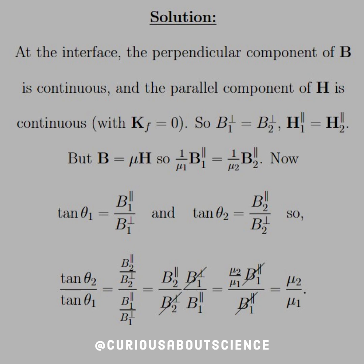Okay, but we know that the magnetic field is related to H via μH, so the parallel components are 1 over μ₁ times B₁ parallel equals 1 over μ₂ times B₂ parallel.